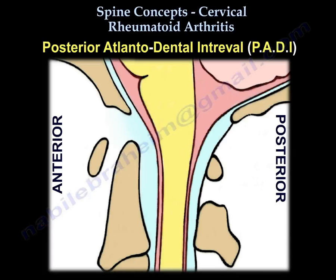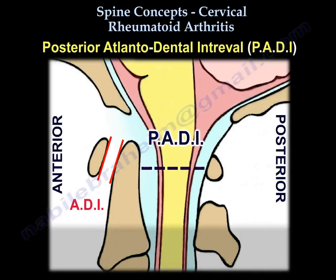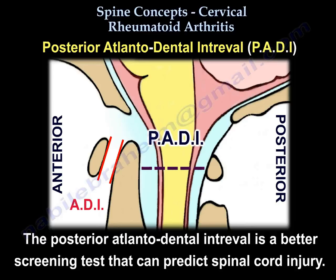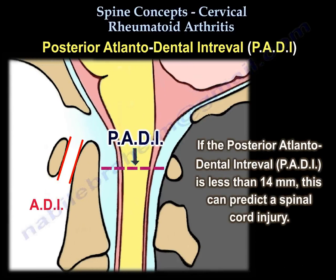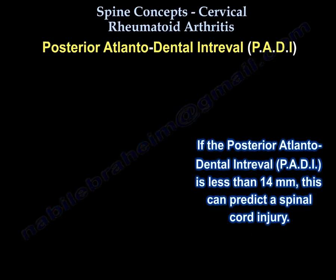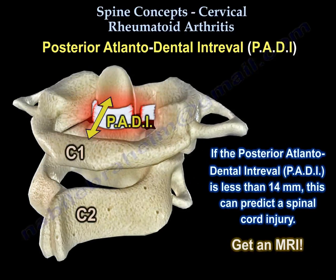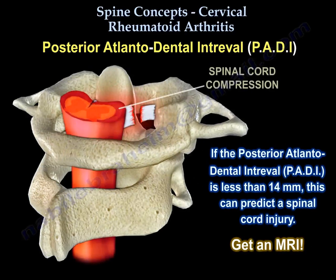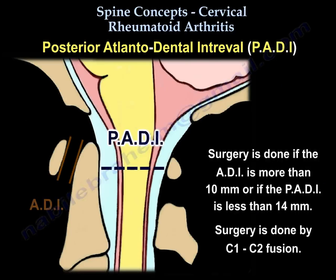The posterior atlanto-dens interval (PADI) is a better screening test and can predict spinal cord injury. If the posterior atlanto-dens interval is less than 14 mm, it can predict spinal cord injury and an MRI should be obtained. Surgery is indicated if the ADI is more than 10 mm or the posterior ADI interval is less than 14 mm.